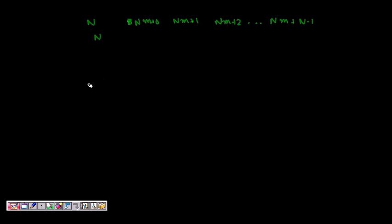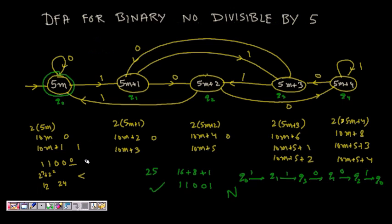Another variant is when the alphabet is not binary but base-4, with symbols 0, 1, 2, 3. In that case, when you receive a new digit, a left shift by 1 means multiplication by 4. The basic DFA for binary numbers divisible by 5 is the finite automata we constructed. I hope you understand this. Thanks a lot.